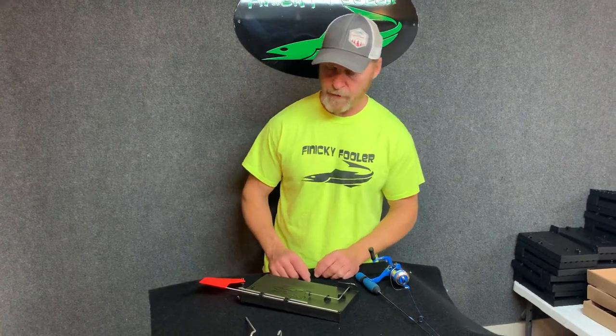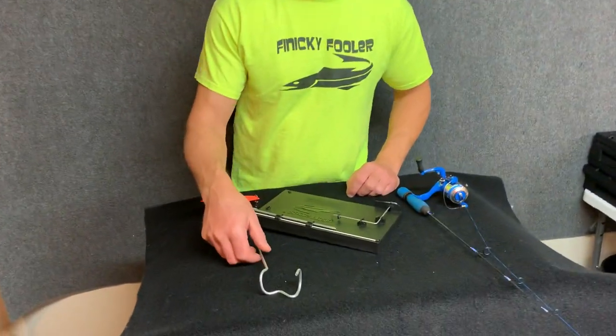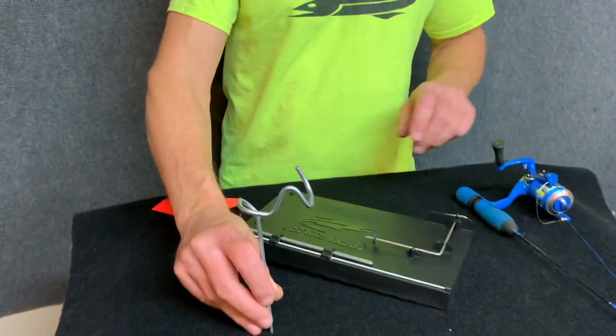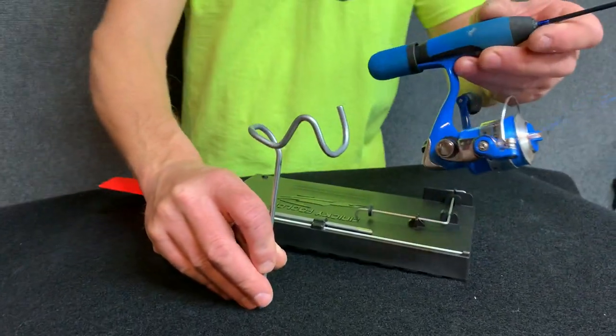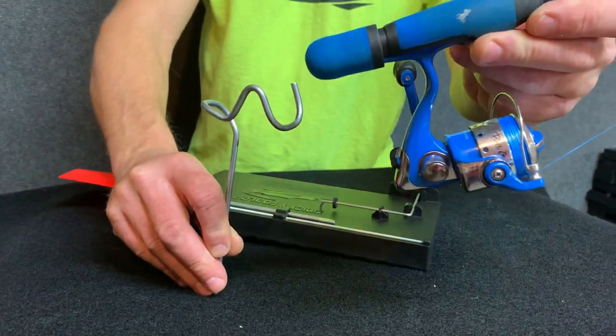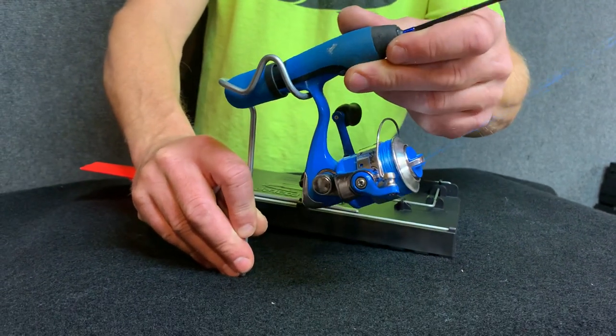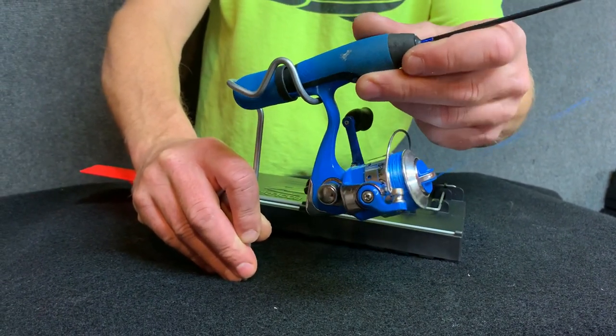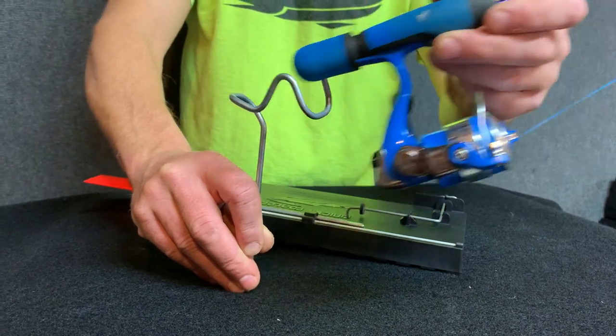All right, we're doing an updated video on the Fuller. We made a change here. This is the old rod holder, and the problem we have with this rod holder is with these short butt rods. They couldn't quite make the distance here, so they didn't fit real well in there. The longer butts obviously had no issue with it.